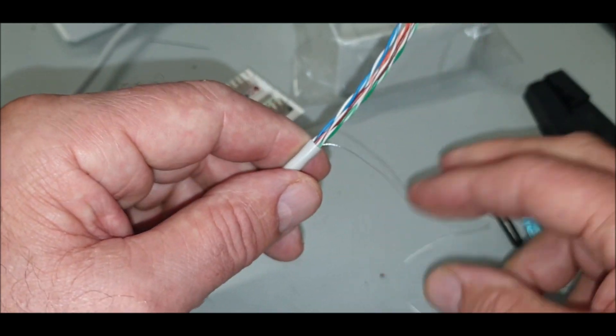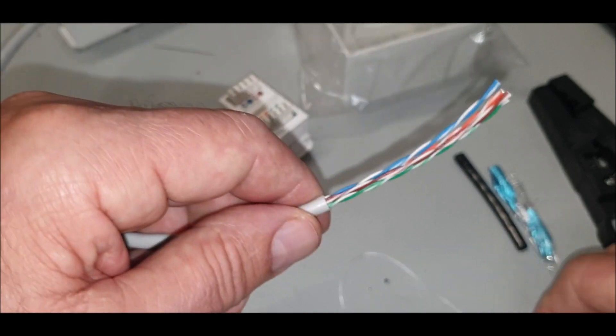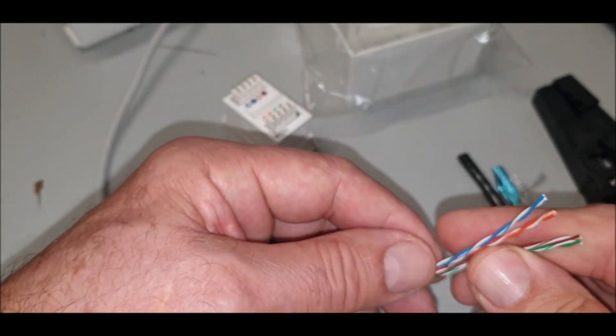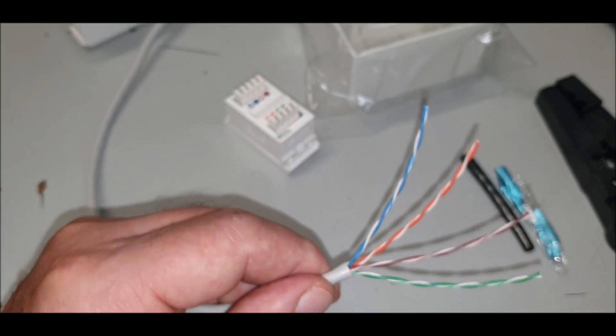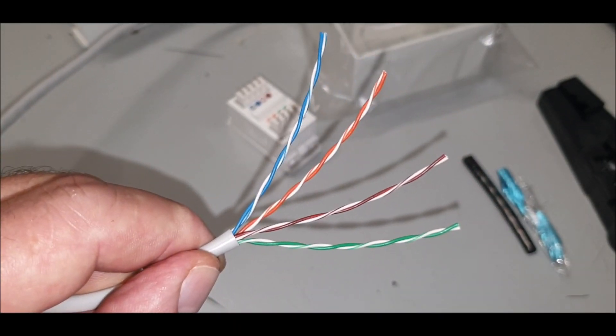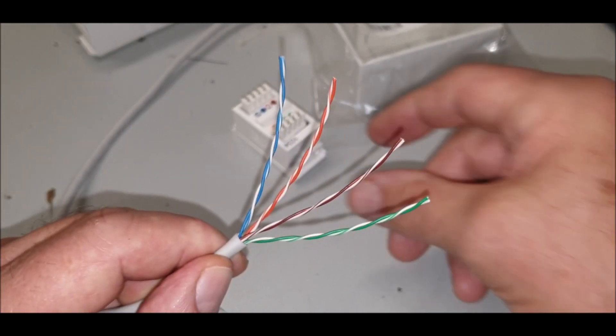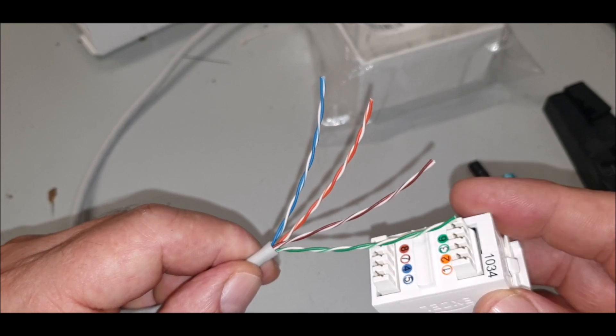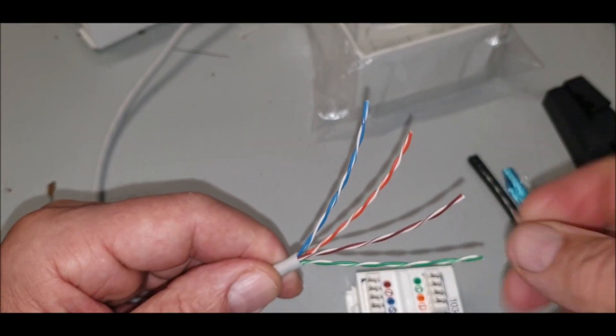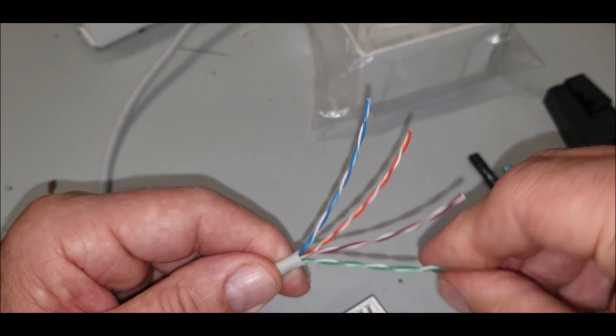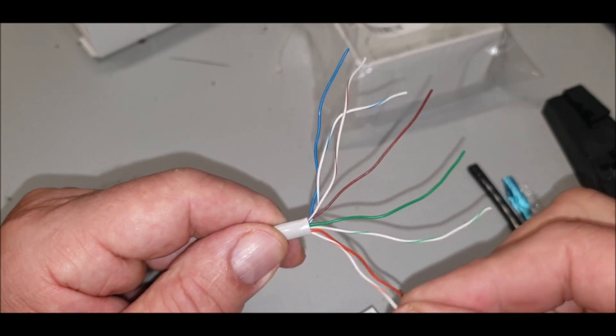That's it, your eight wires, four pairs. Same principle: orange, white orange, green, white blue, blue, white green, brown, white brown. When it comes to this, it's pretty easy stuff. I'm going to untwist them. By the magic of TV it gets unraveled like that.